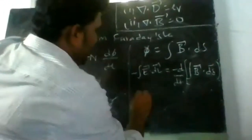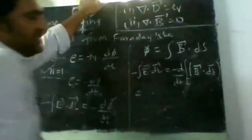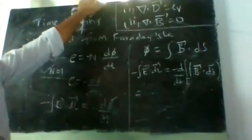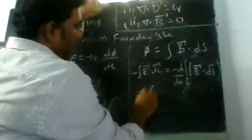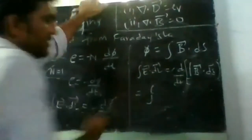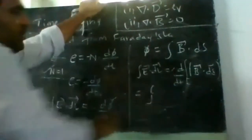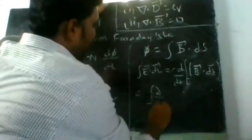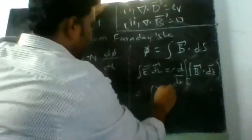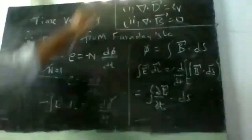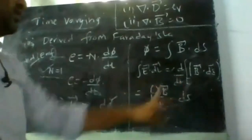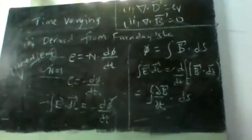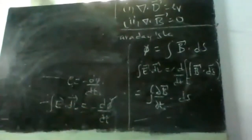Changing the order of integration and differentiation — sending the d/dt inside — and cancelling the minus signs, what we get is: ∮Ē·dl̄ = ∫(∂B̄/∂t)·dS. It becomes a partial derivative because we have changed the order.